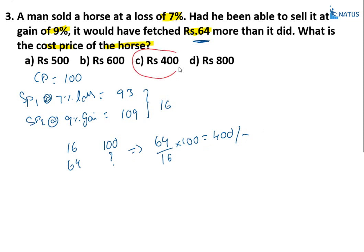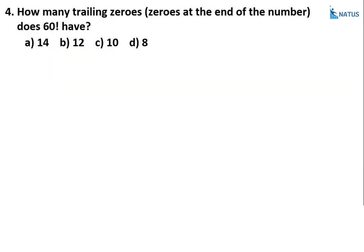Option C is the correct answer. Fourth question: How many trailing zeros are at the end of 60 factorial? This is a simple question if you know the concept.